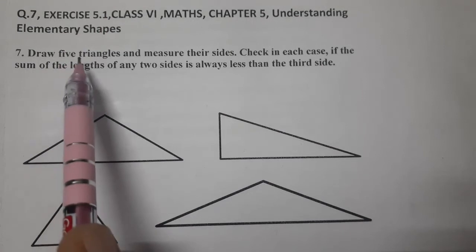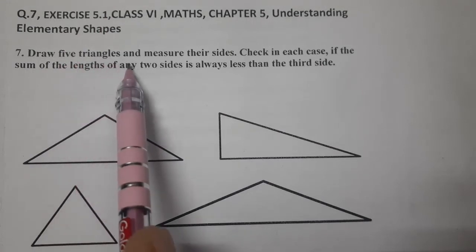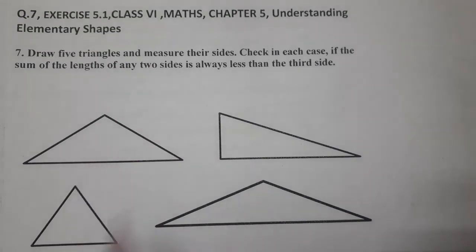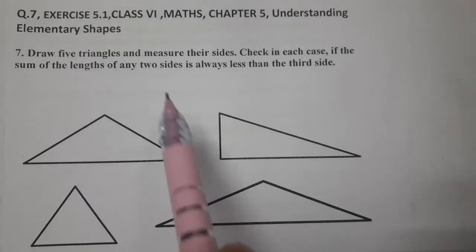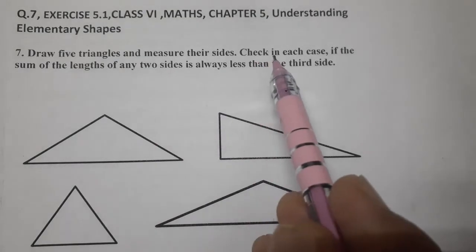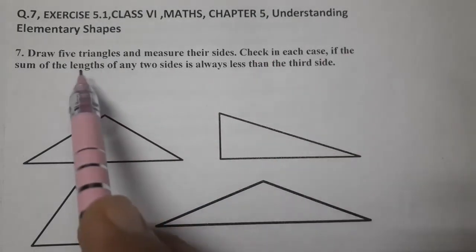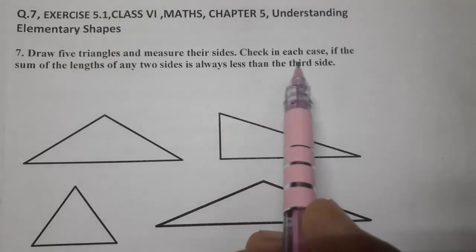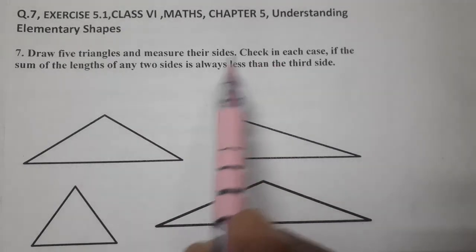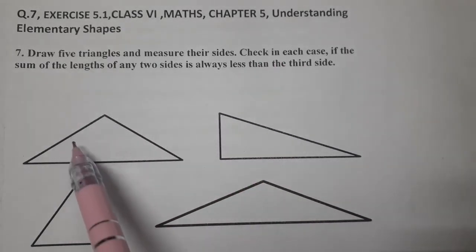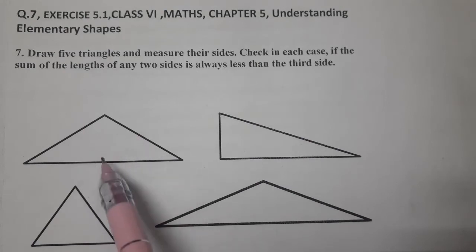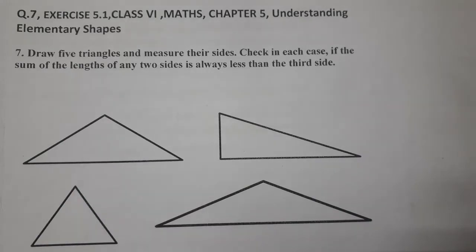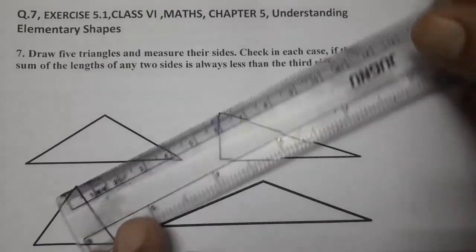Draw 5 triangles and measure their sides. We have already drawn 5 triangles: 1, 2, 3, 4, and just below the 5th one. We have to check in each case if the sum of the length of any two sides is always less than the third side. So let's measure the sides of the triangles.